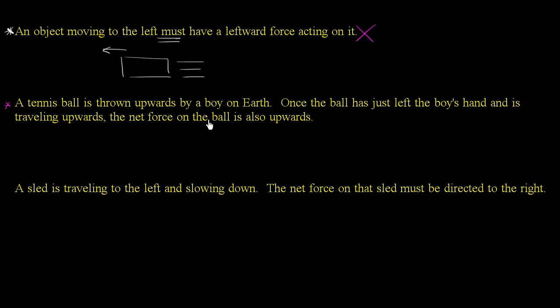Second statement: A tennis ball is thrown upward by a boy on earth. So let's say that this is the tennis ball. Let me draw - this is the tennis ball. It's just left the boy's hands. It's thrown upwards. So the tennis ball, once again, it's going in the upwards direction, just like that.